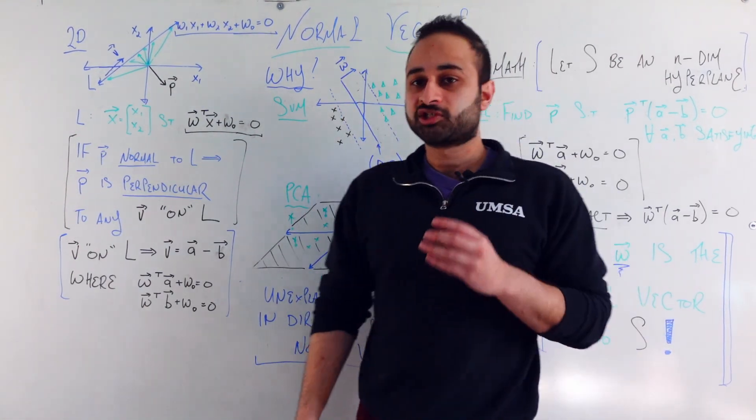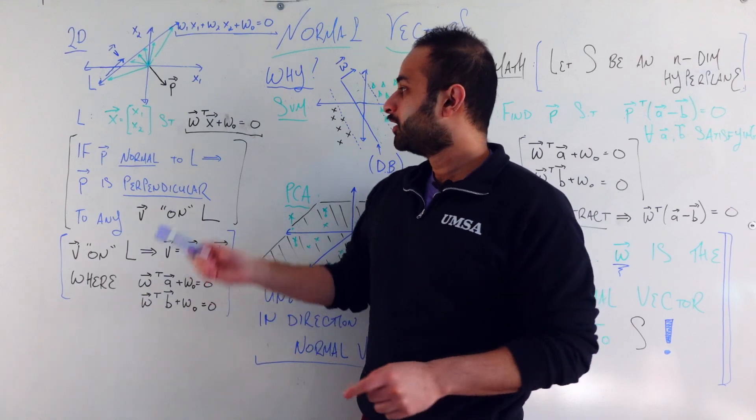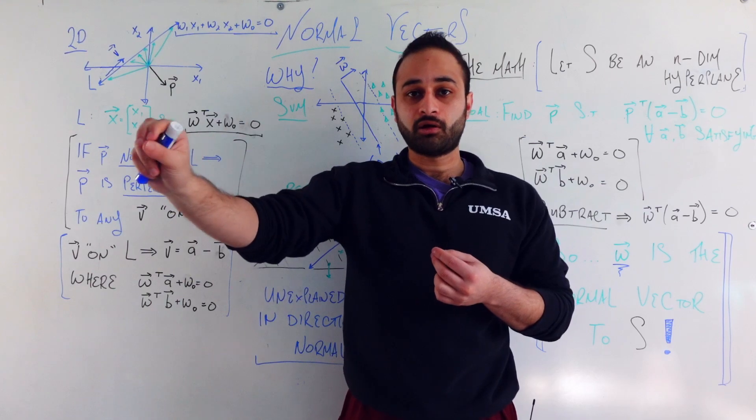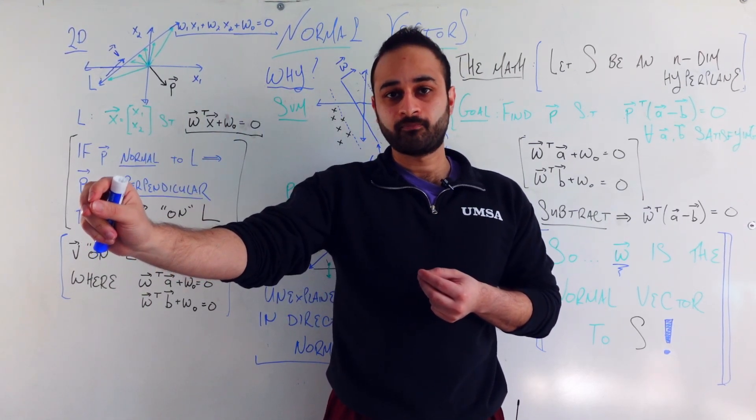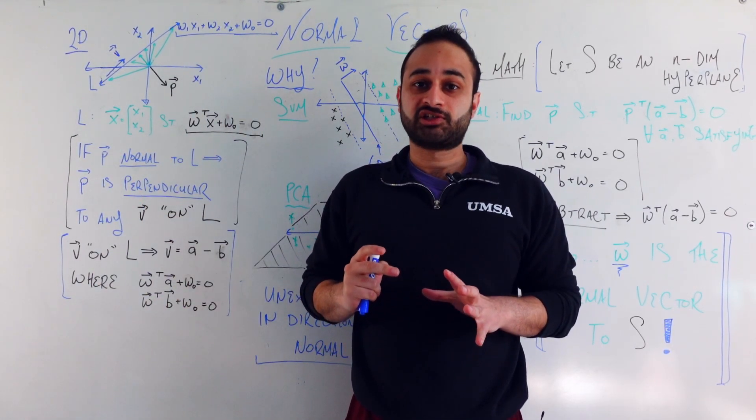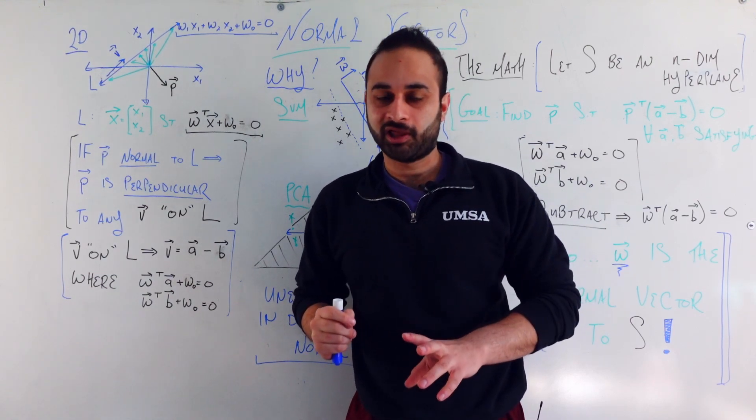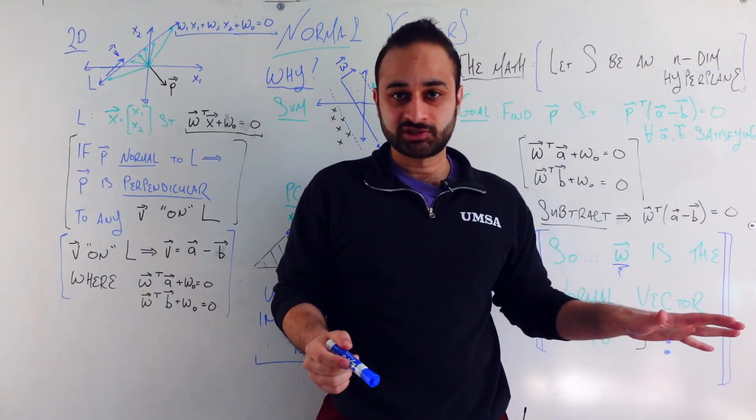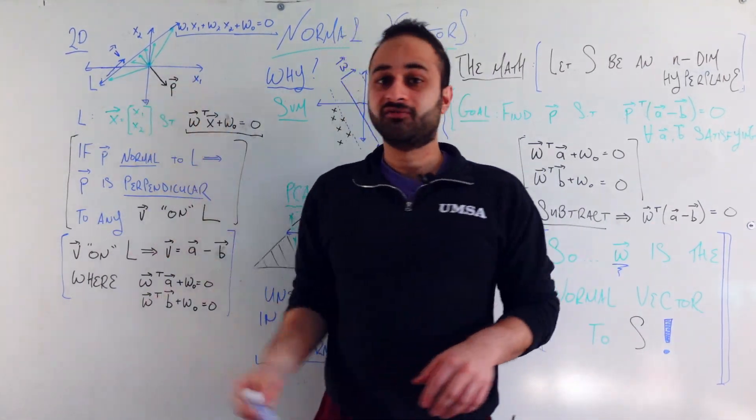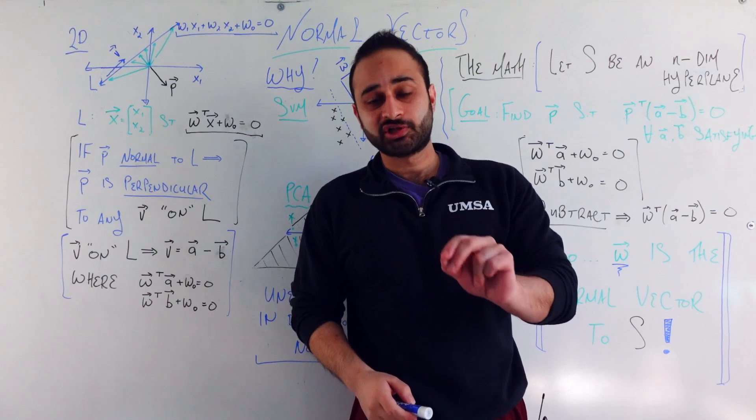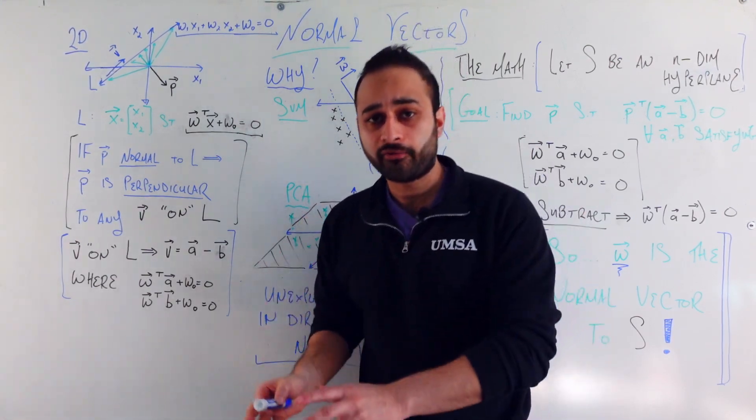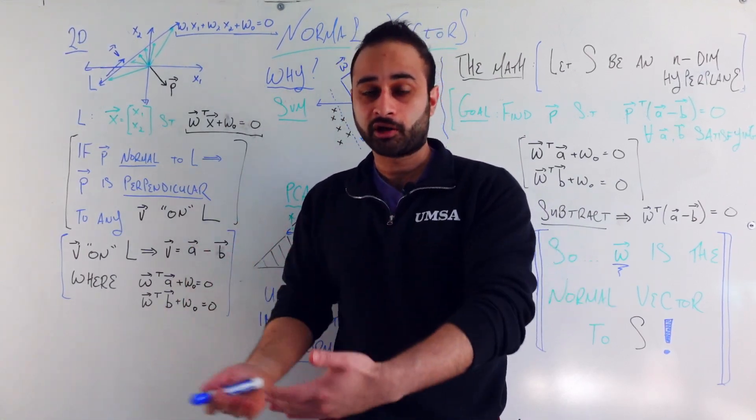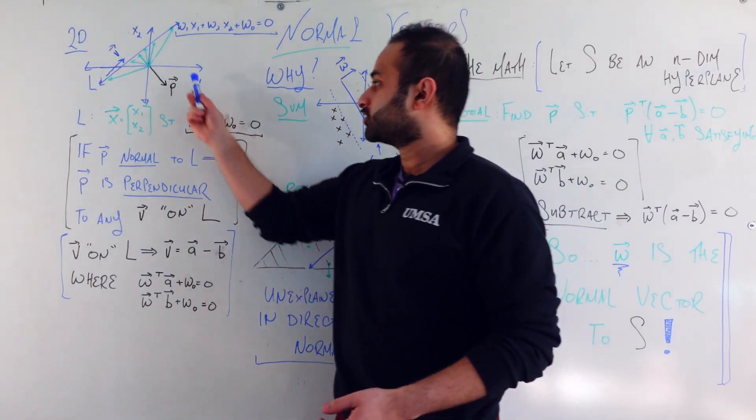But just know the big concepts you want to make sure you understand are that if any vector satisfies this equation then it's like these green vectors who end on the line or end on the plane. But those are not the vectors that we consider being on the line or on the plane. The vectors we consider being on the line or on the plane are actually any subtractions of any two of these green vectors. And it is those vectors that are on the line or on the plane who are concerned with having dot product of zero being perpendicular, orthogonal, or normal with this vector p.